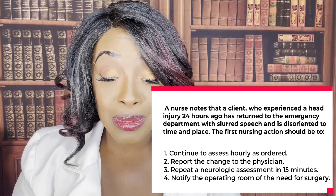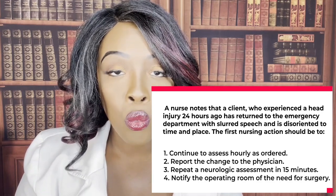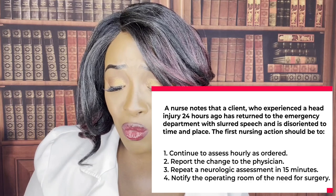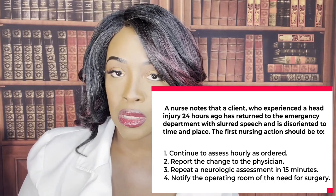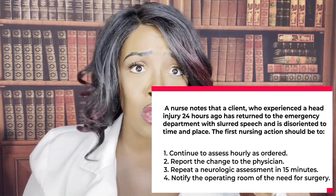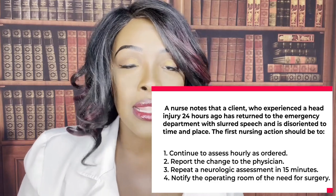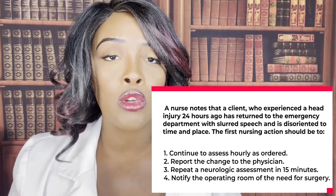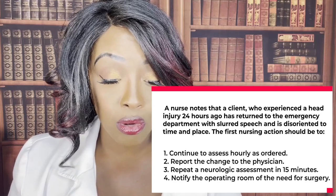Choice four — notify the operating room of the need for surgery — is outside your scope of practice. You're not going to call the OR to prep without even notifying the doctor first. You're going to report your findings to the physician or nurse practitioner, and they will make the decision about surgery and notify the OR — not you. Your job is to report these findings. So the correct answer is number two.